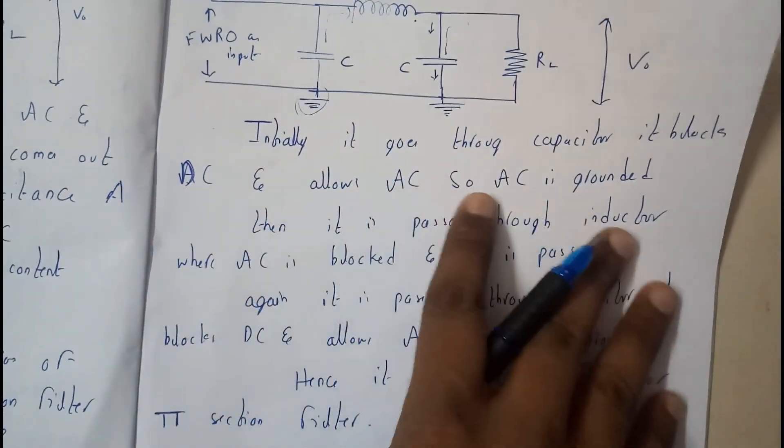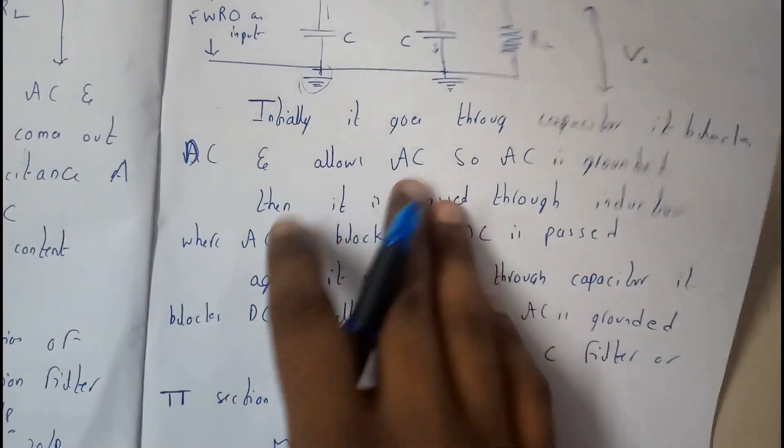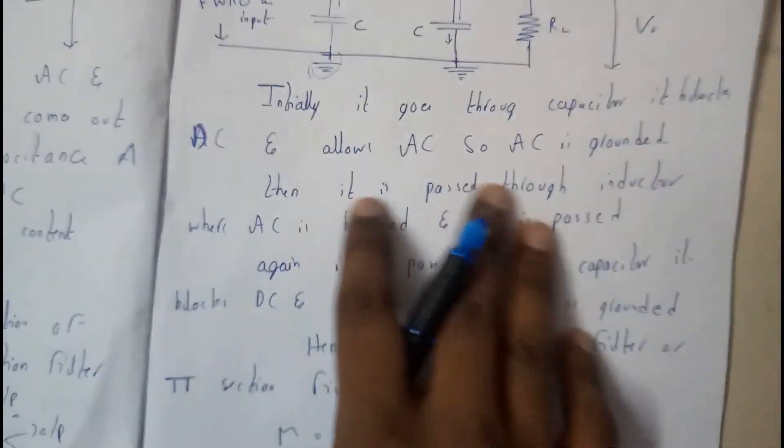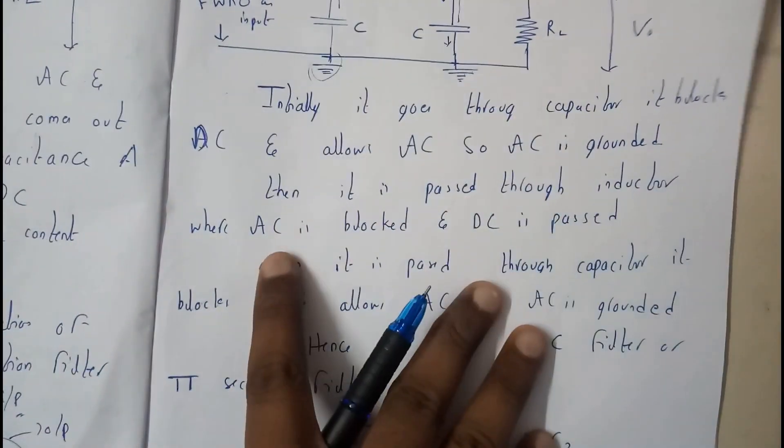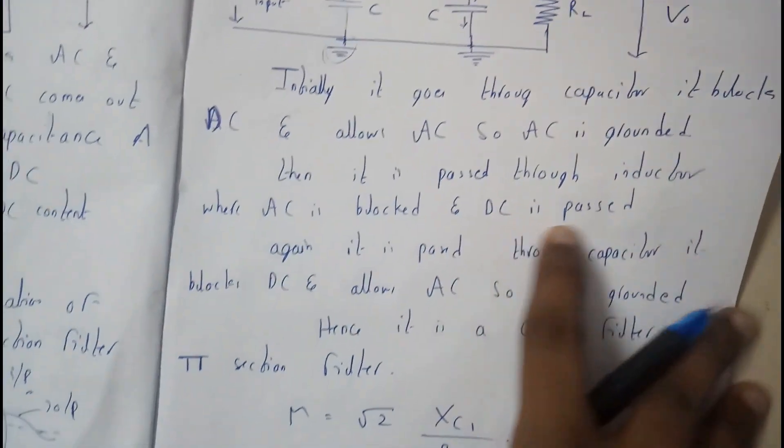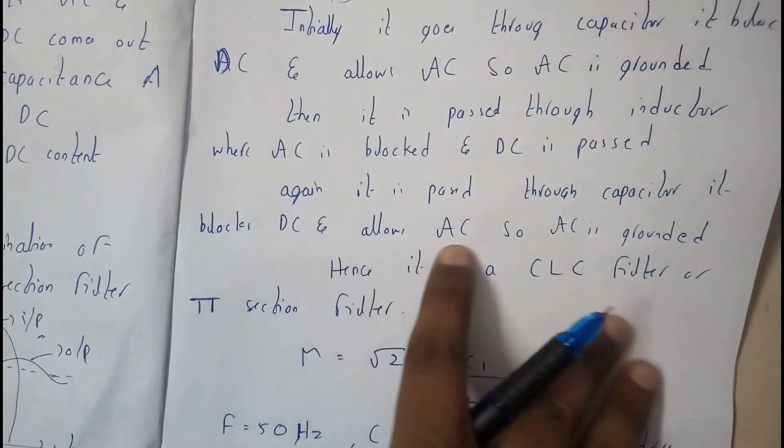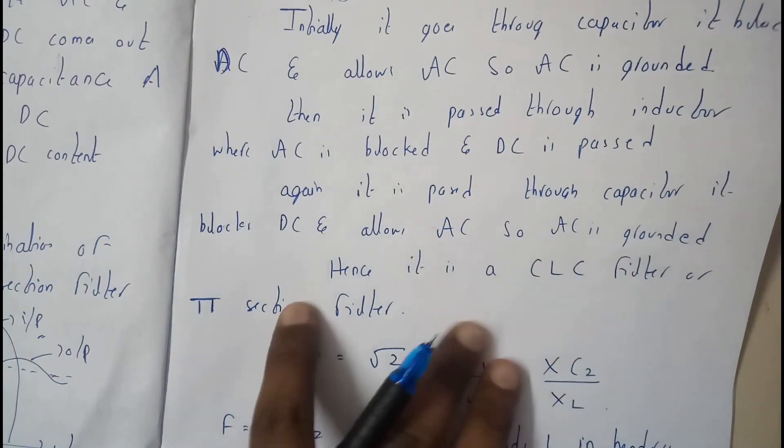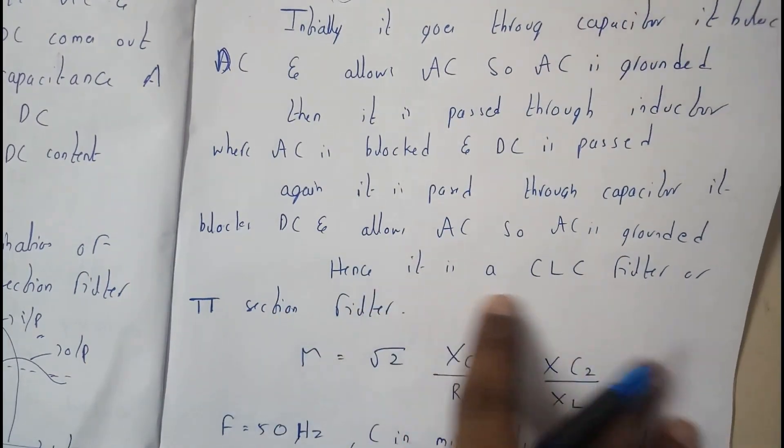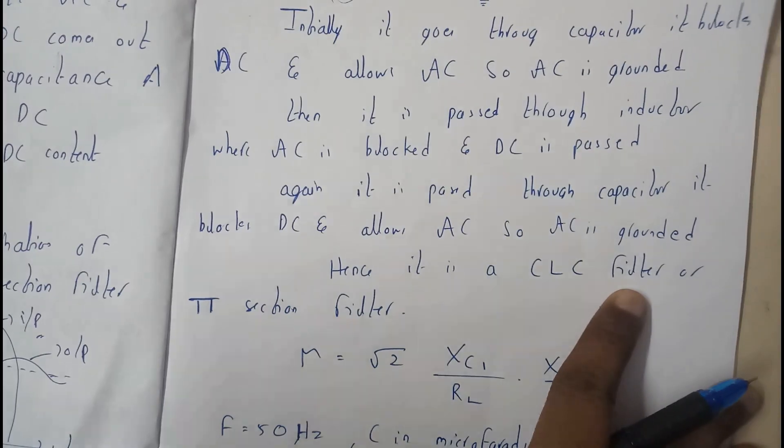Initially, it goes through the capacitor which blocks DC and allows AC, so AC is grounded and vanishes. Then it passes through the inductor where AC is blocked and DC is passed. Again, it passes through the capacitor which blocks DC and allows AC, so AC is grounded. Hence, it is a CLC filter or pi-section filter.